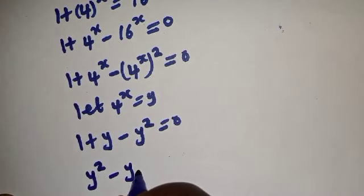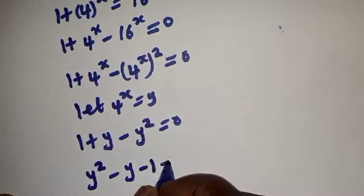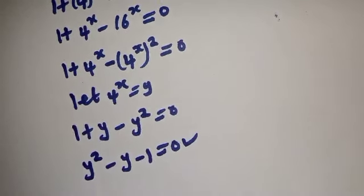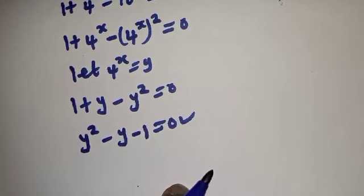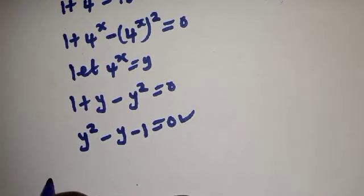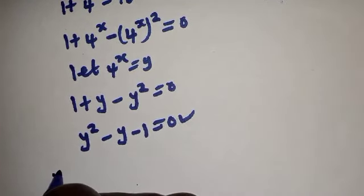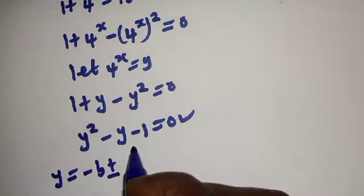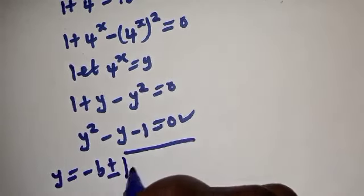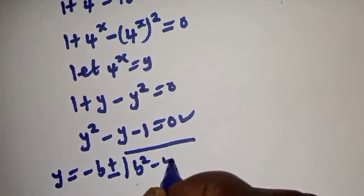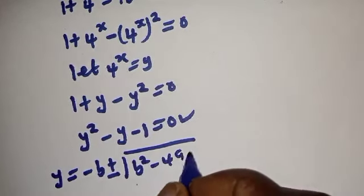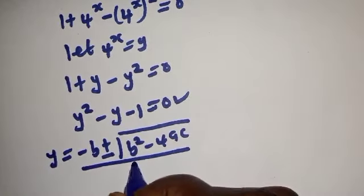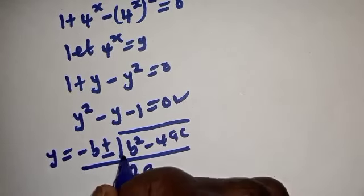Substituting, we have 1 plus y minus y squared is equal to 0. Rearranging: y squared minus y minus 1 is equal to 0. This is a quadratic equation which can be solved using the quadratic formula: y is equal to minus b plus or minus square root of b squared minus 4ac, over 2a.